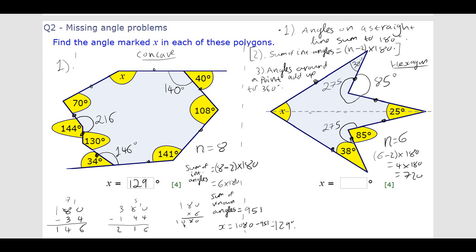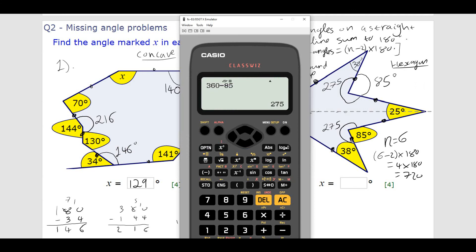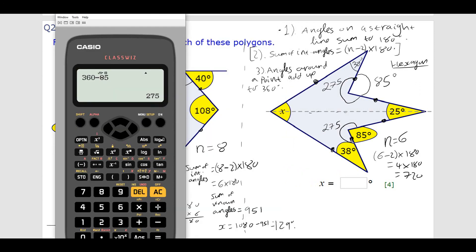So, to find x, I simply add up all the angles that I know within the shape. So, here, that is going to be, if my calculator wants to agree with me. So, here, that's going to be 38 plus 275 plus 25 plus 275. Oh, sorry. Let me do that again. 38 plus 275 plus 25 plus 275 plus 38.